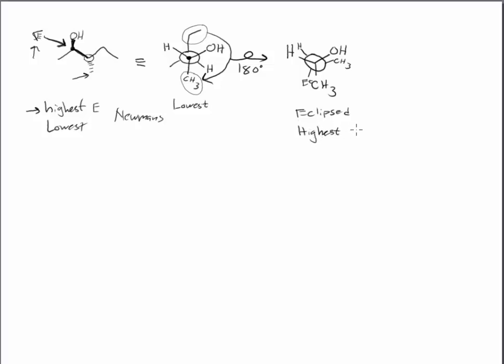This is the eclipsed version, and it will be the highest energy. As we learned in the book and discussed in class, there are three different eclipsed conformers. But because the largest groups here are eclipsing each other, that's where we get to the highest energy.